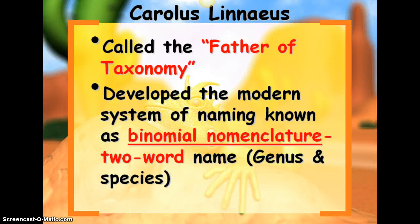Binomial nomenclature is a two-word name. We name organisms with the genus and the species name. There are other names that classify them into broader categories, but to get specific, it's kind of like a first name and a last name — except rearranged to be last name first. The genus name is a little more broad and covers more individuals, while the species name is very specific. In a family, your last name is the same for your group, but your first name is specific to you — the genus name is like your last name and the species name is like your first name.